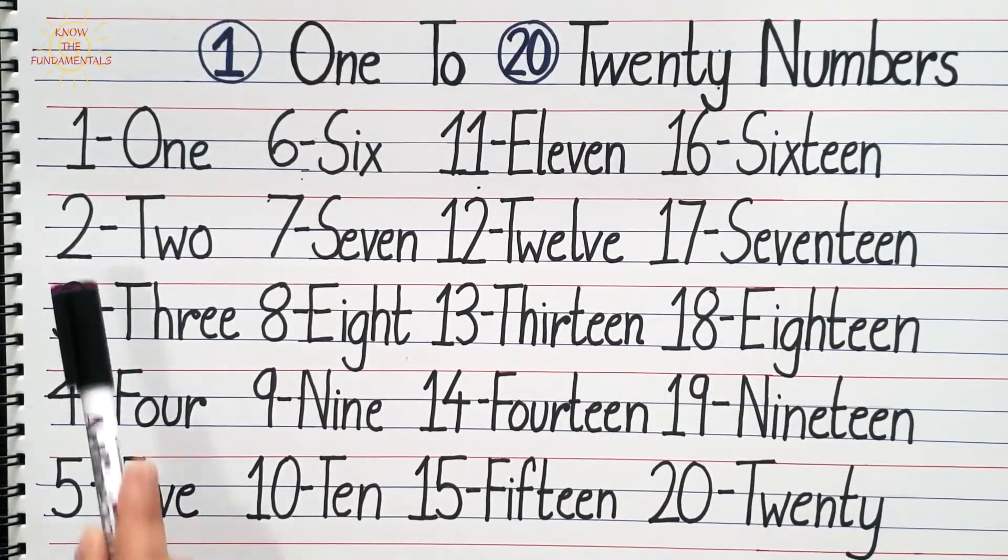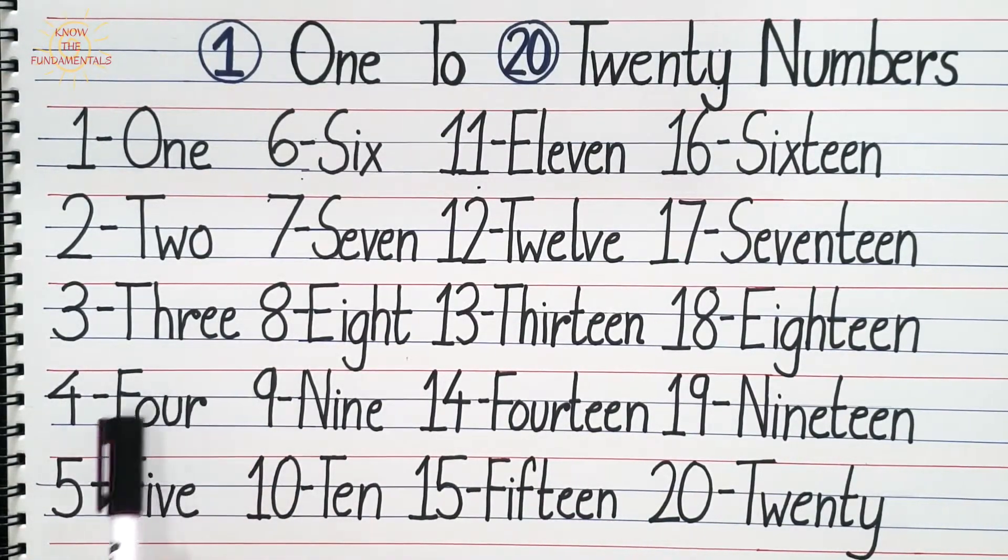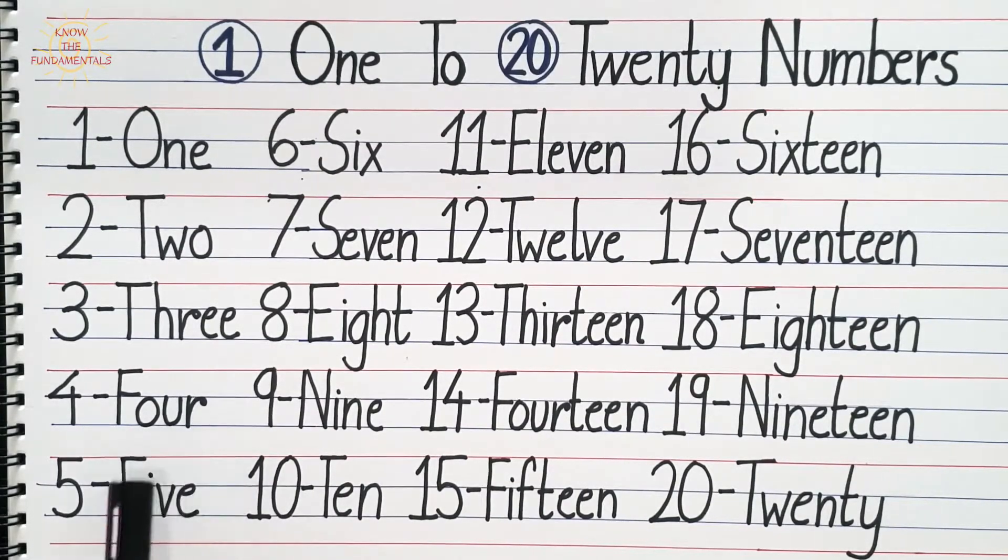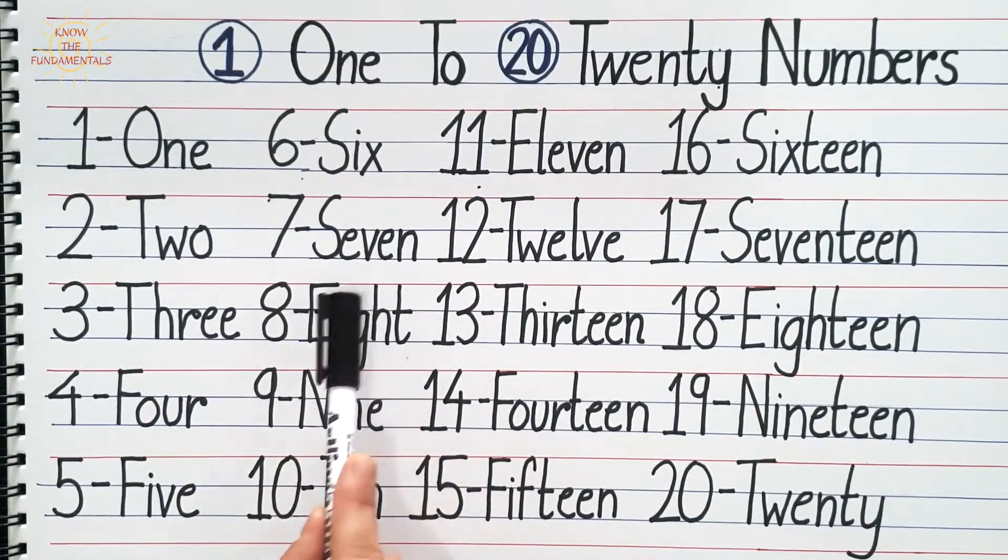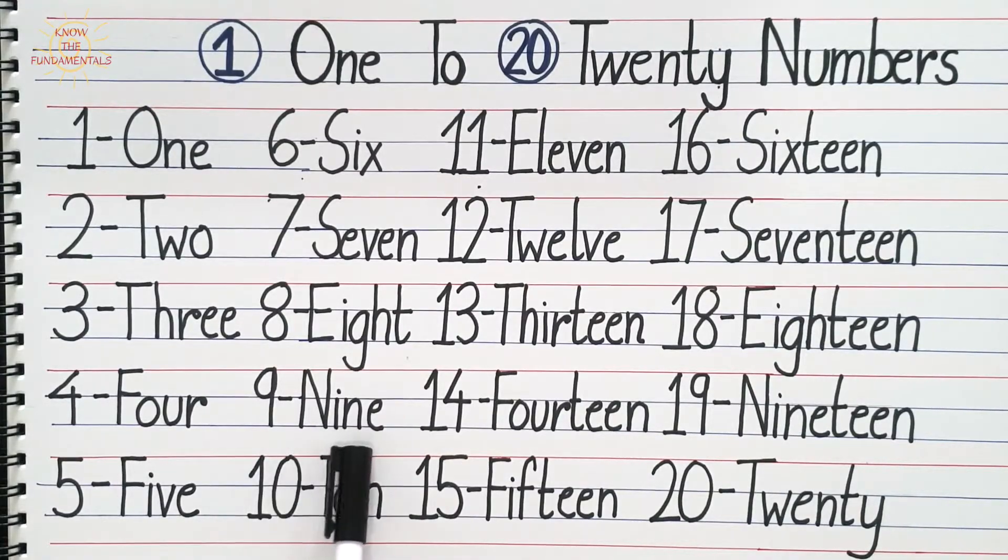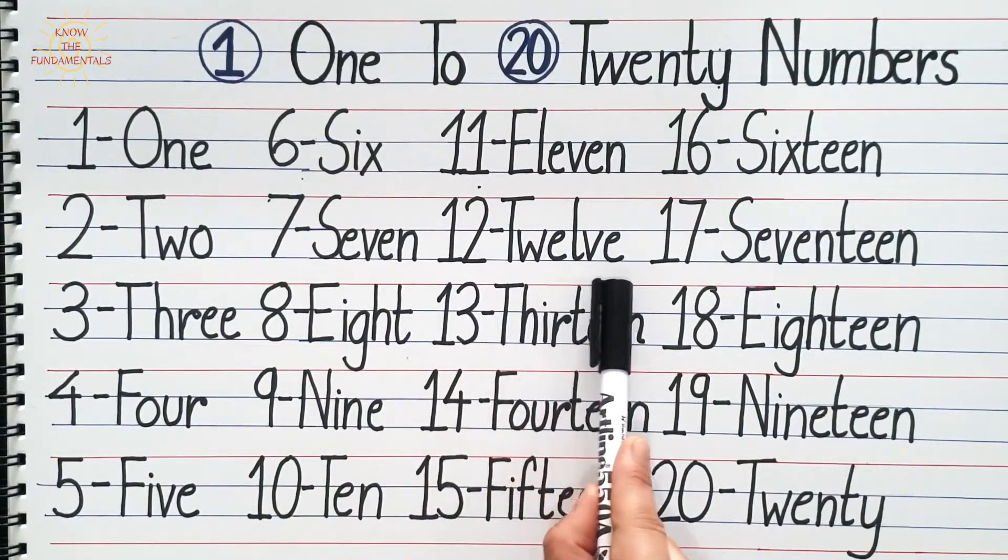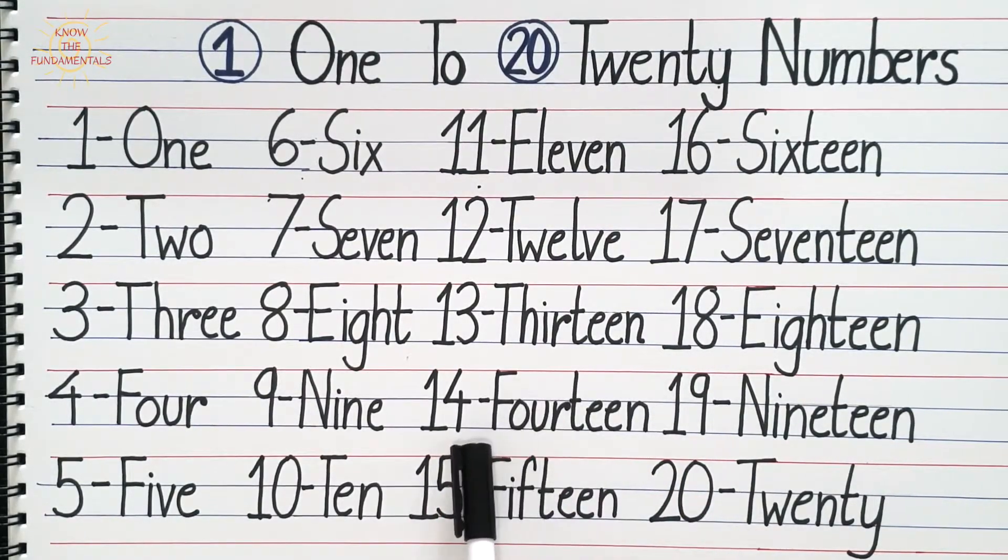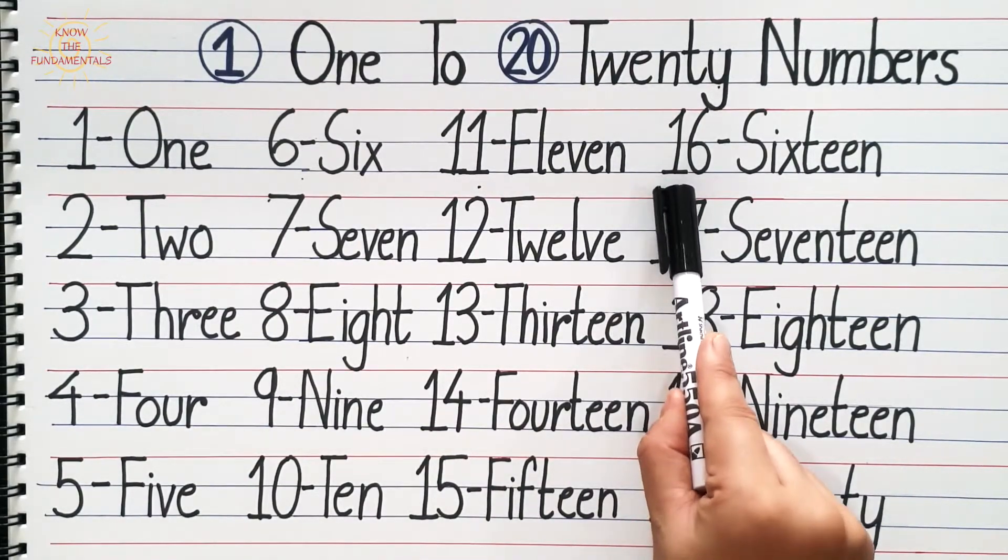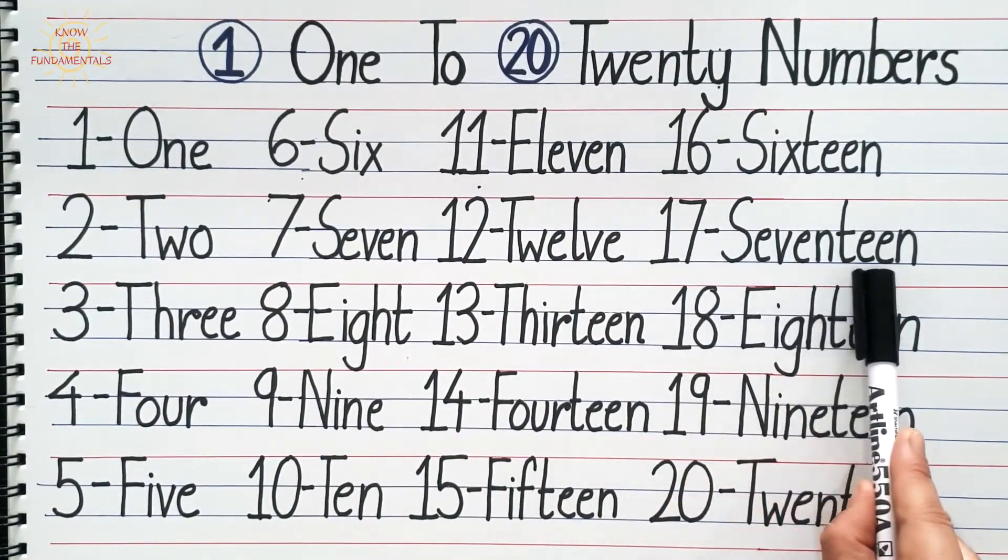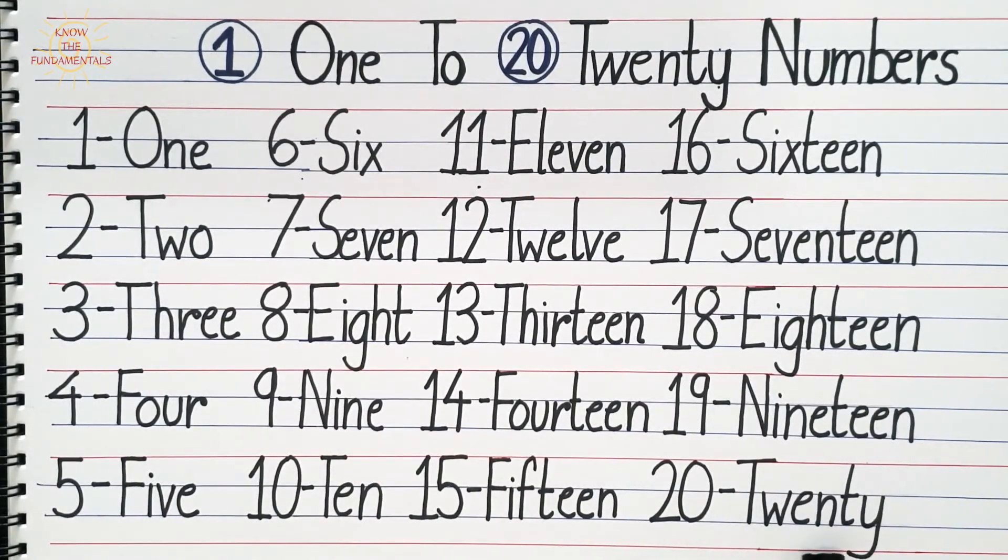Now let's count once again. One, Two, Three, Four, Five, Six, Seven, Eight, Nine, Ten, Eleven, Twelve, Thirteen, Fourteen, Fifteen, Sixteen, Seventeen, Eighteen, Nineteen, Twenty. Thanks for watching.